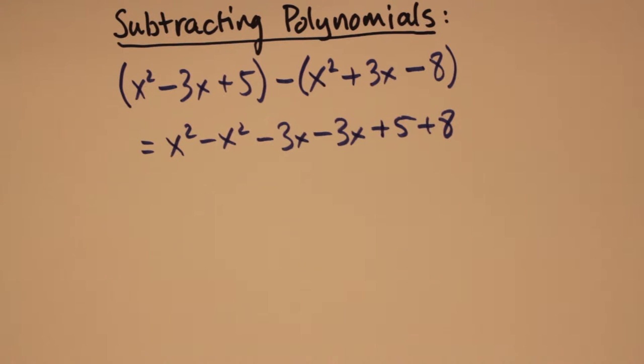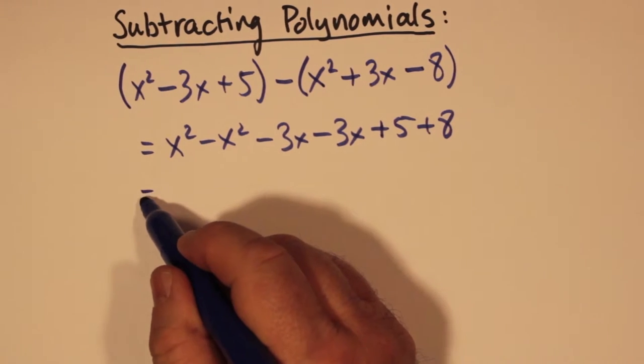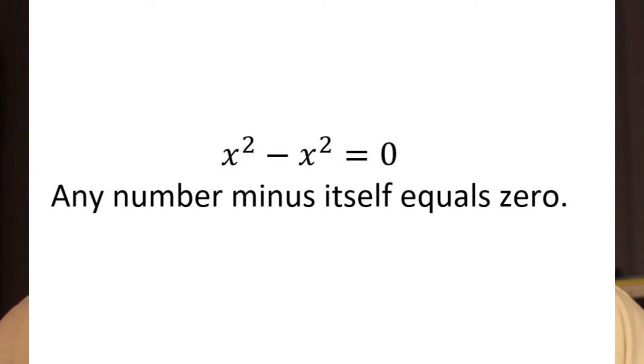So x squared minus x squared, that just goes to 0. The terms cancel - anything subtracted from itself is 0.